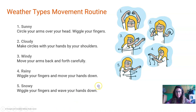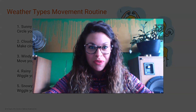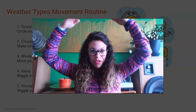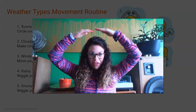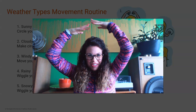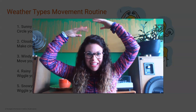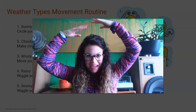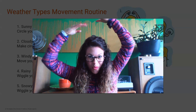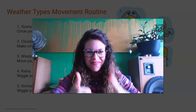The first type is sunny. Whenever we talk about sunny weather, you're going to circle your arms over the top of your head and wave your fingers. That's sunny weather. Show me sunny weather with your body.